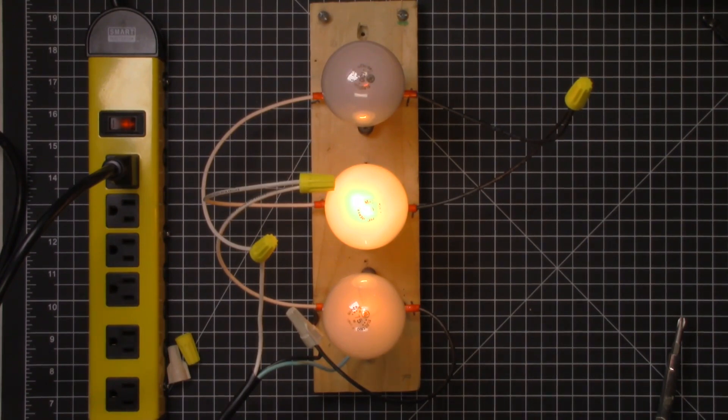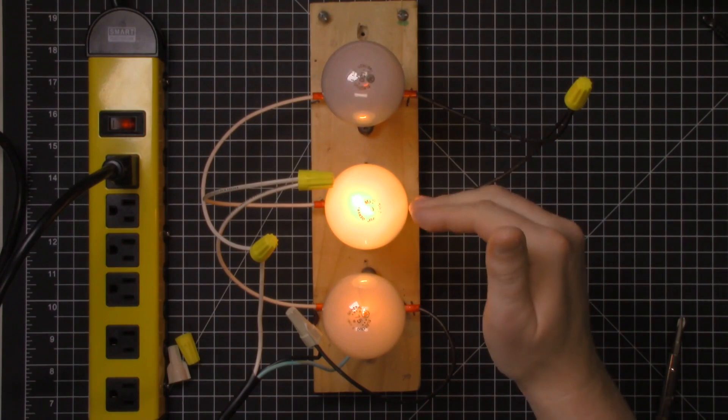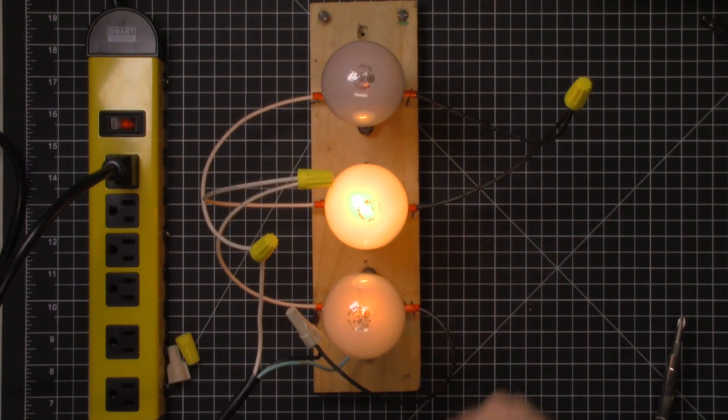Those would be connected all up in series and you notice that the 100 watt light bulb is the dimmest, the 60 watt is the brightest, and the 75 watt is the second dimmest. So let's take a look at the voltage drops across each of these.